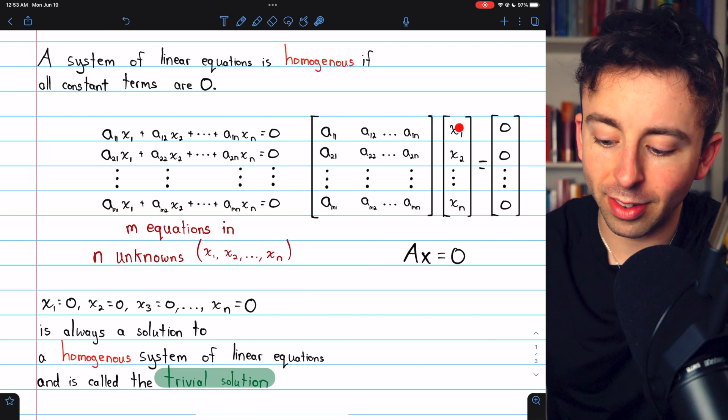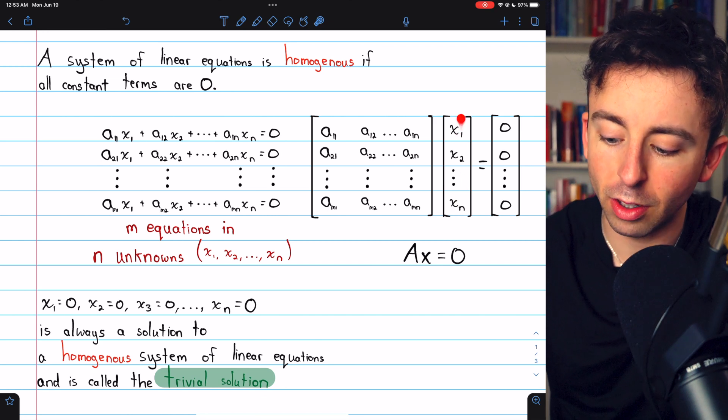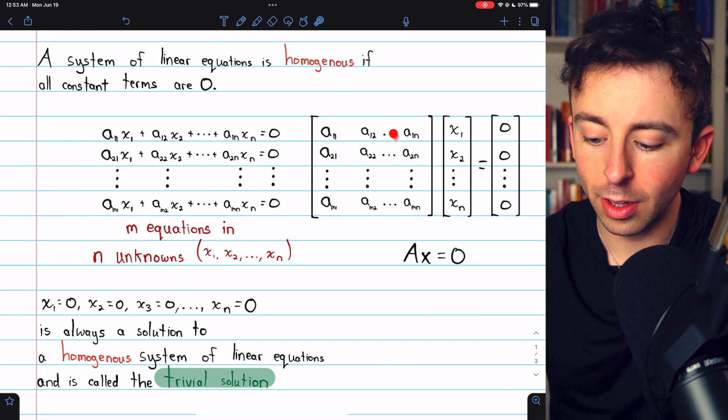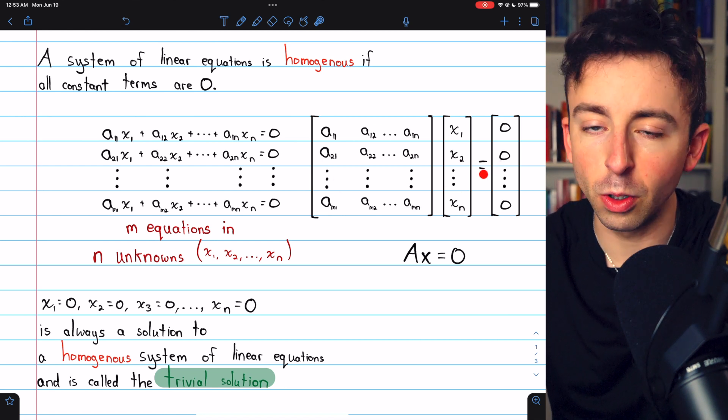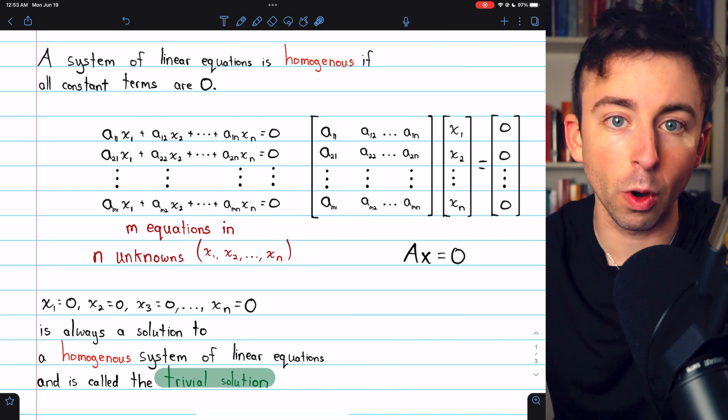You can imagine if we just set all of these unknowns here in this vector equal to zero, the multiplication would just result in the zero vector. So it is a solution to the equation. It's the trivial solution.